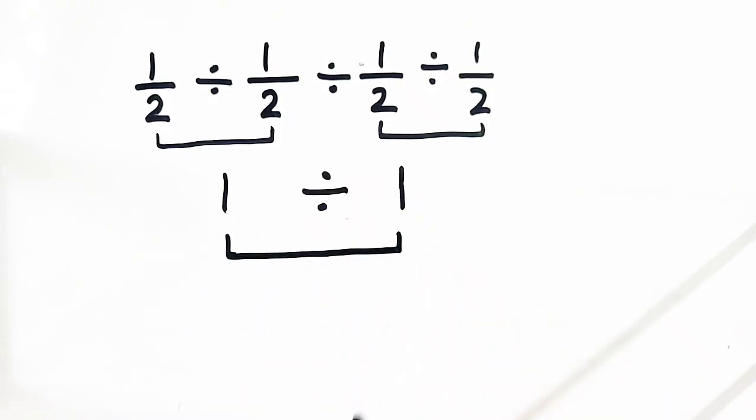Now, 1 divided by 1 is equal to 1. But it is a wrong way to solve.